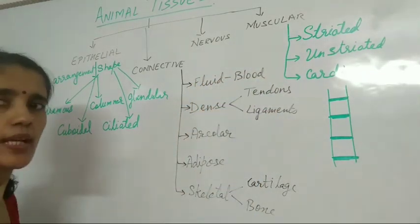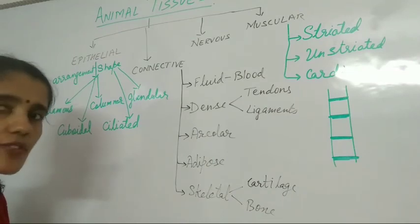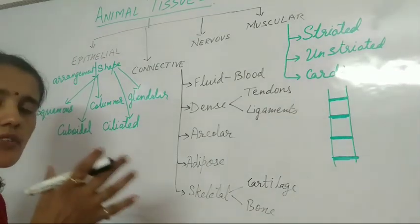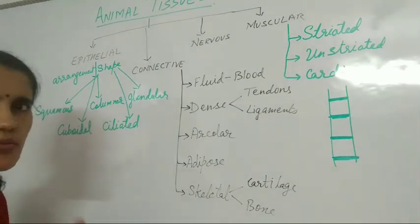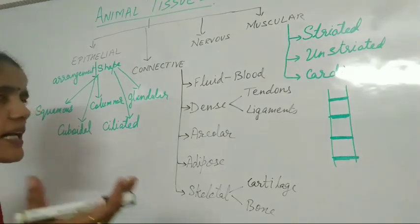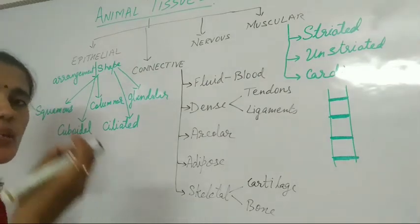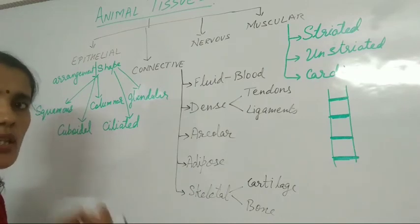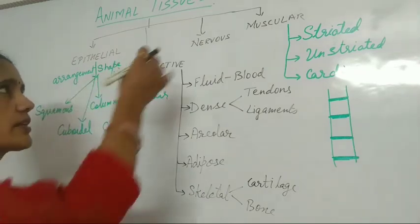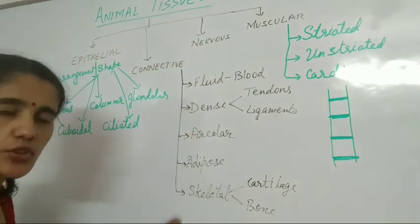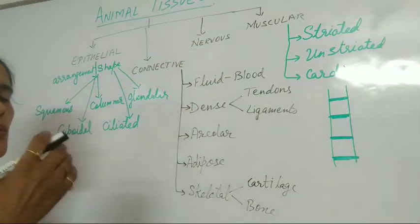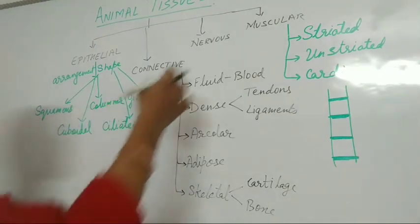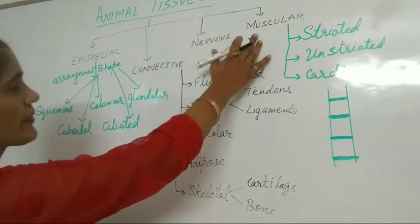And nervous tissue — we all know it is nerve cells. Nerve cells have a peculiar function and structure. It conveys the message from one part of the body to the other. On the response of these nerve cells only, we are able to reply or convey messages.